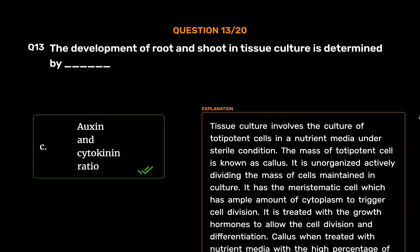Tissue culture involves the culture of totipotent cells in a nutrient media under sterile conditions. The mass of totipotent cells is known as callus — an unorganized, actively dividing mass of cells maintained in culture. It has meristematic cells which have ample cytoplasm to trigger cell division. When callus is treated with media with a high percentage of auxin, it promotes rooting; when treated with media with a high percentage of cytokinin, it stimulates cell maturation, differentiation, and finally promotes the development of stem.